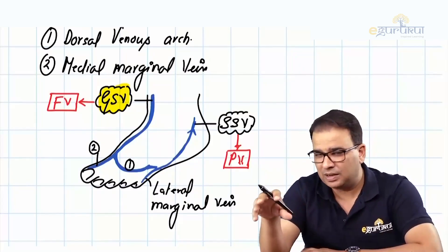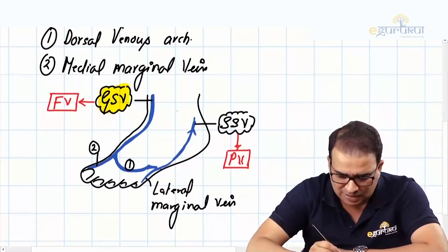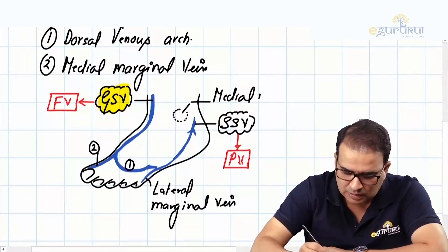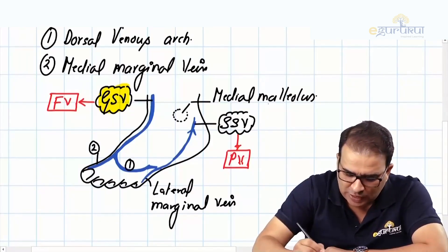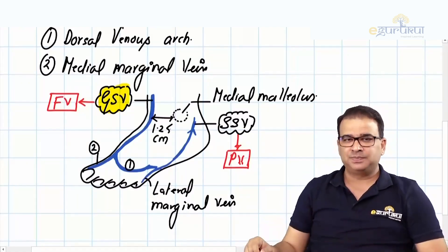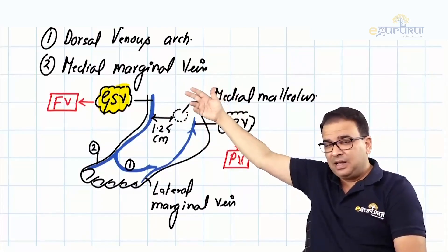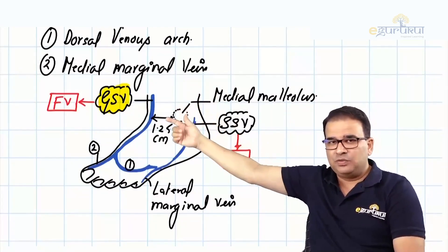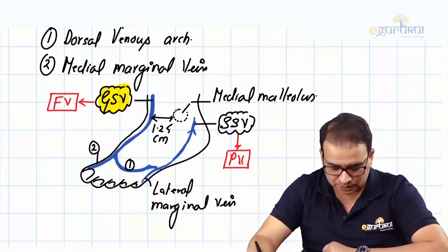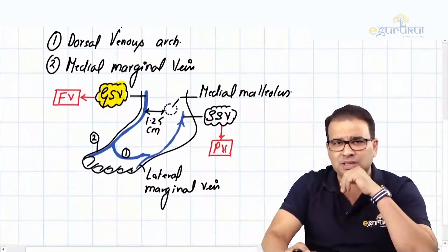Where to find the great saphenous vein near the ankle: since this picture is from the lateral side, presume this is the medial malleolus. You will find the great saphenous vein approximately 1.25 centimeters in front of the medial malleolus — not behind, in front of the medial malleolus.